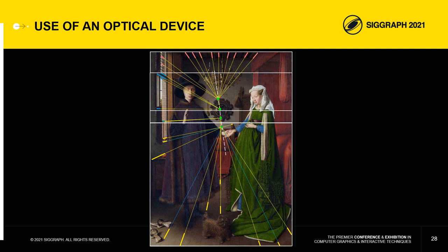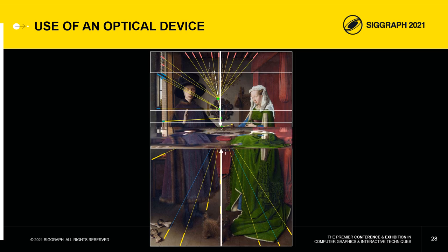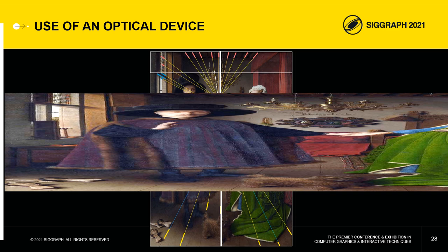The viewpoint changes during the painting process induce a parallax phenomenon, which we can see, for example, in the Arnolfini portrait by vertically flattening the painting. An interesting observation is that this edge on the left of the window is not affected by parallax.